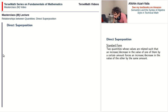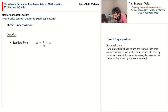The equation for direct superposition comes in two forms. The standard form is one where q2 is equal to a constant plus q1. A constant has a fixed value — the value may change from problem to problem, but for any given problem the value is fixed. So for some problems k may be 3.2, in some other problem k may be 4.8, but whatever value it picks for a given problem, that value will not change.